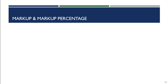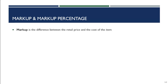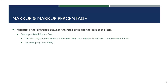Most retailers set the price by marking up an item's cost to yield a profitable gross margin. When we talk about retail price, we look at markup. When we say the word markup, we're referring to the difference between the retail price and the cost of the item.